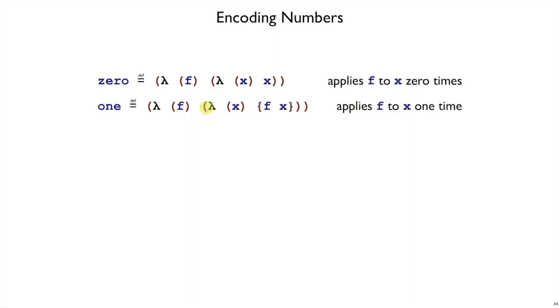But 1, 1 will have the same starting pattern. Take an f, take an x, and it'll apply f to x one time. 2 will apply it twice in the sense that it takes the result of the first application and passes it into the second application.